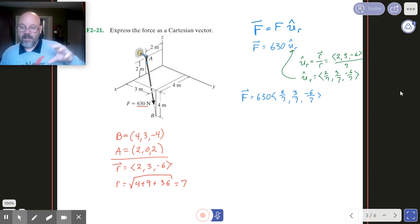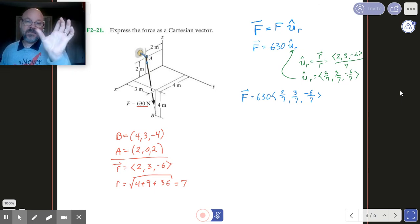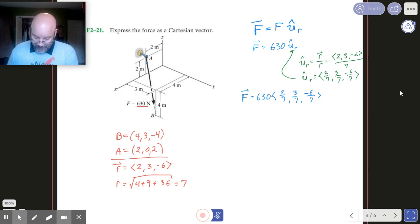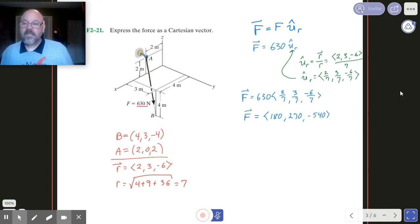And then just like in algebra, we can pass the 630 inside to it there. It's just that magnitude is a scalar, so we just scale all the components up. And so 630 divided by 7 is 90, so we've got 90 times 2, 90 times 3, and 90 times negative 6, just like that.